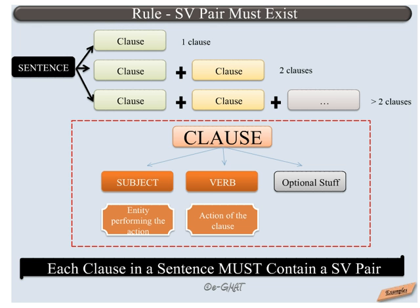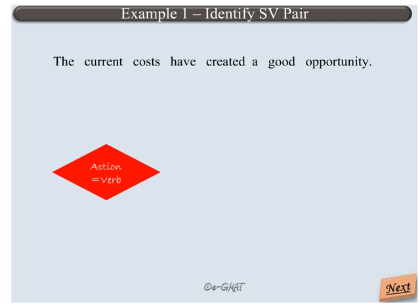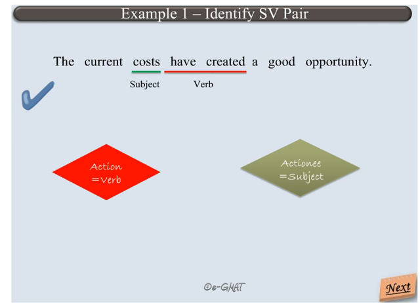Click on the examples button below to view some examples of this concept. Let's look at an example now. We will first identify the verb — the action in this sentence — which is 'have created.' Now we will find the subject, the entity that performs this action: 'costs.' So this sentence has one clause and hence one subject-verb pair: 'costs have created.' Thus, this sentence obeys the subject-verb pair must exist rule.